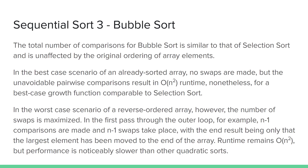In the worst case scenario, where all of the elements are in reverse order, not only do we maximize the number of comparisons, but we also maximize the number of swaps. In the first pass through the outer loop, n-1 comparisons are made and n-1 swaps take place, and the end result of all that work is only that the largest element has bubbled up to the top of the array. Runtime remains O(n²) for both best and worst case scenarios, but bubble sort's performance under any circumstance is noticeably slower than the other quadratic sorts.